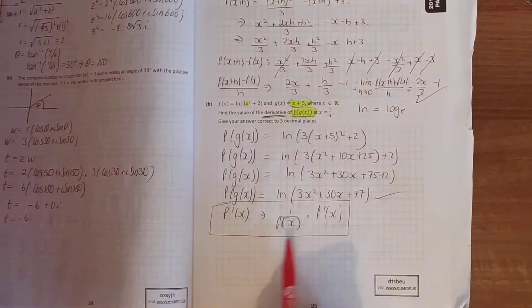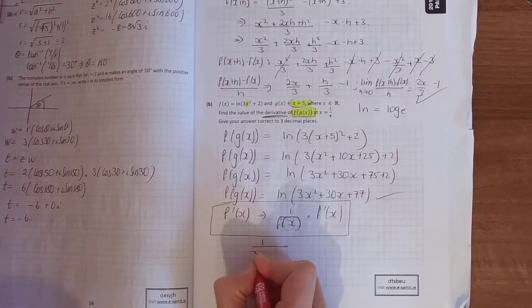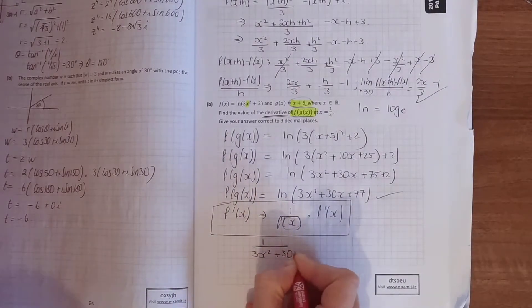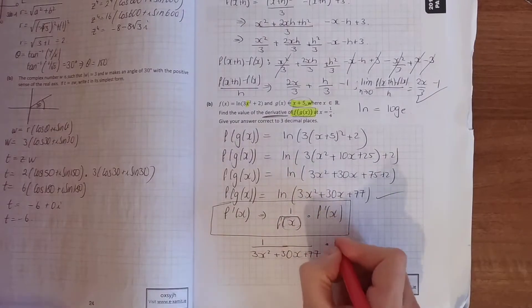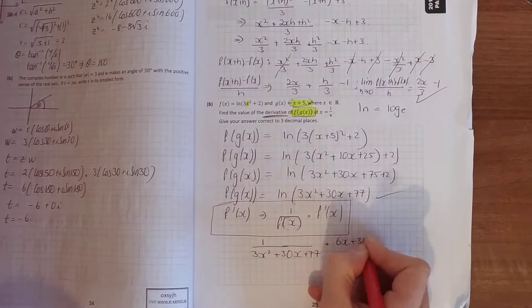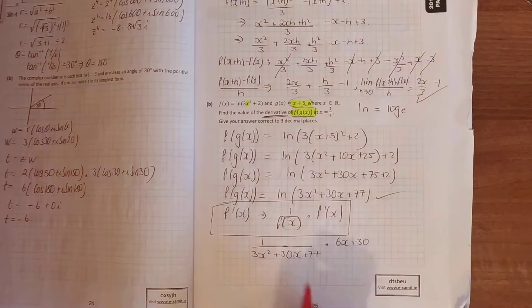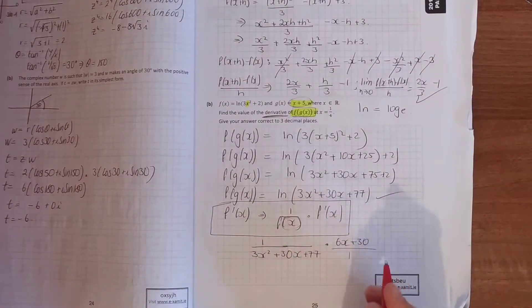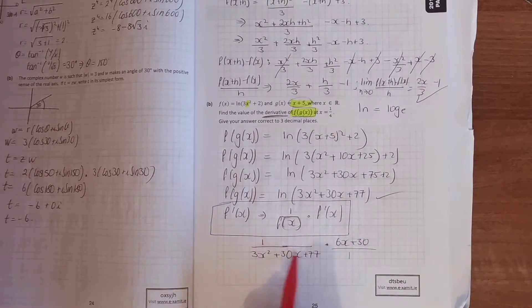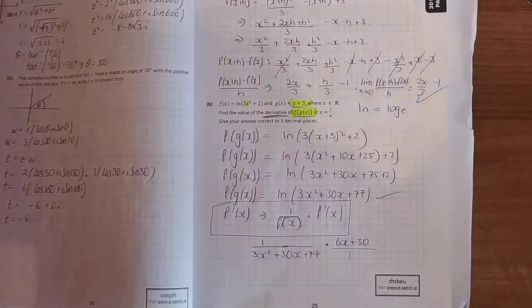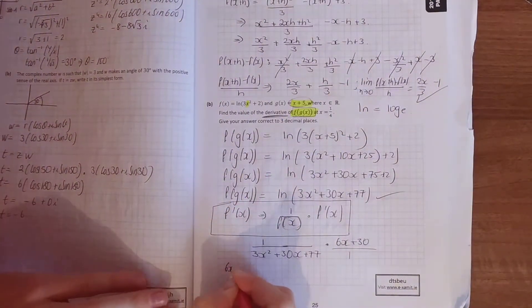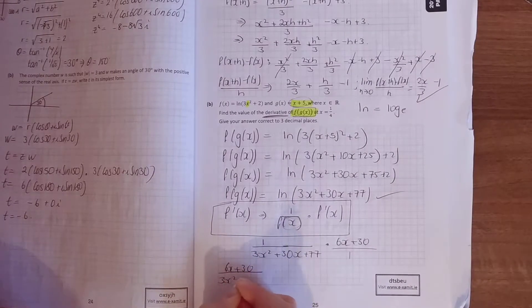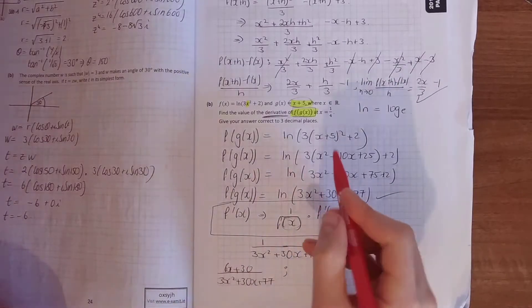So here, our function is this, so 1 over 3x squared plus 30x plus 77 times the derivative of the function, 6x plus 30. And when you're tidying that up, it's a fraction multiplied by a fraction, so it's top by top, bottom by bottom, just squeeze them both together. And when you do that, you get 6x plus 30 over 3x squared plus 30x plus 77.